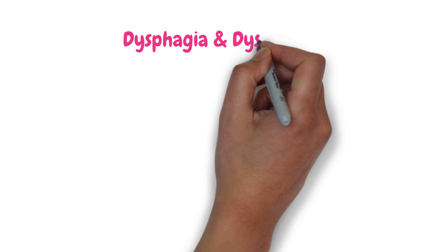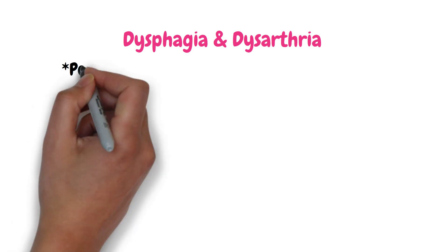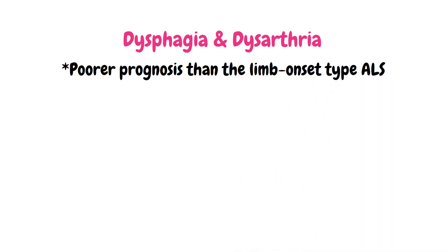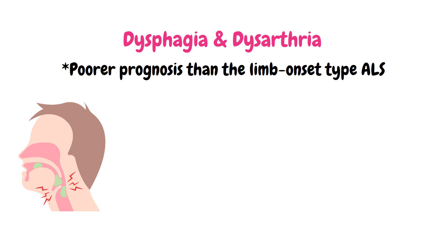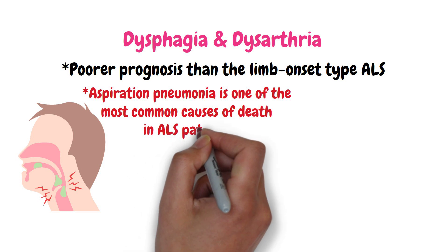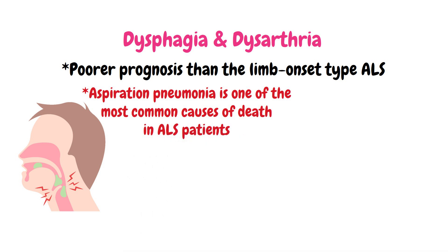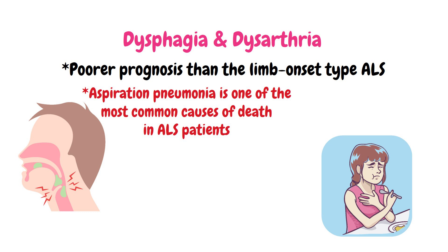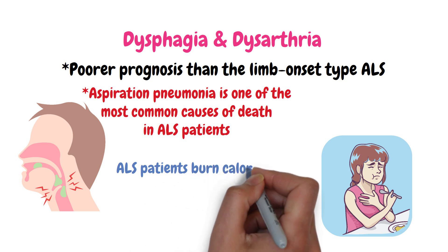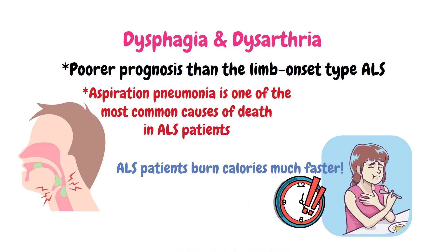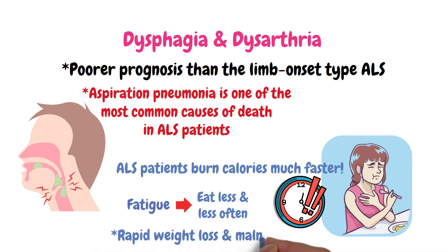ALS can also cause dysphagia and dysarthria due to the involvement of bulbar muscles. People with bulbar onset ALS have a poorer prognosis compared to those with limb onset ALS because bulbar onset ALS can lead to dysphagia, or difficulty swallowing, which increases the risk of aspiration. Aspiration pneumonia is one of the most common causes of death in ALS patients. Dysphagia can also make eating difficult, which is a major problem because people with ALS burn calories at a much faster rate than normal, and fatigue from ALS can also lead to eating less.